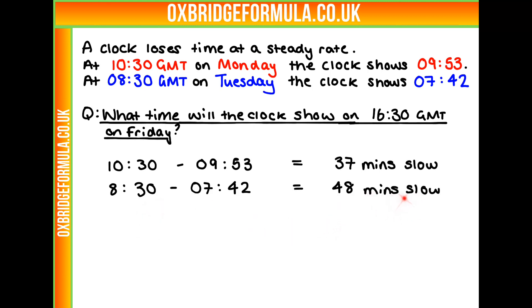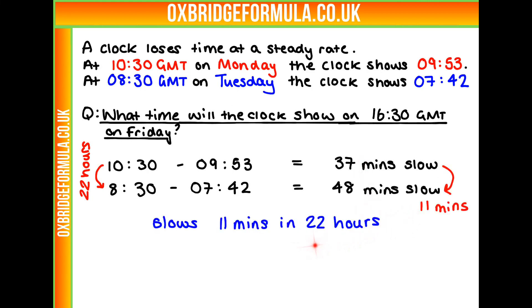So, what's the rate of slowing? In 22 hours, which is the difference between these two times, we can see it's slowed a total of 11 minutes. So it slows 11 minutes in 22 hours. Therefore, in one hour, it's going to slow by half a minute. This is our rate of slowing: half a minute per hour.